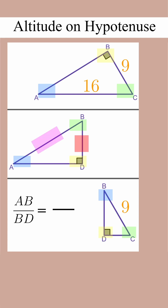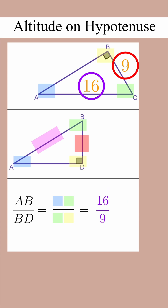I see that's in the second triangle: blue-green over green-yellow. So let's go up to the first triangle and see if we can find blue-green. Blue-green is 16 and green-yellow is 9. Since they're similar, the ratios will be equal, so the answer is 16 over 9.